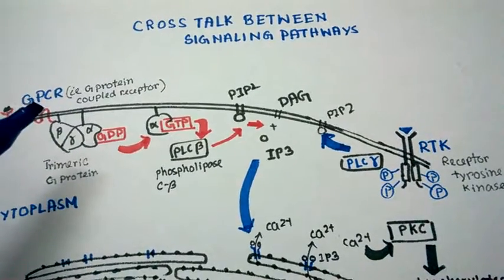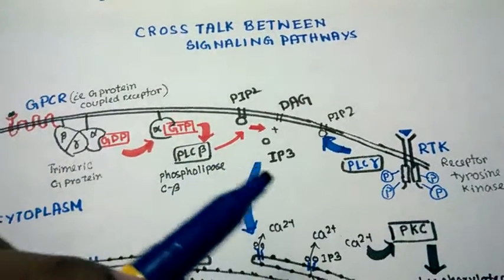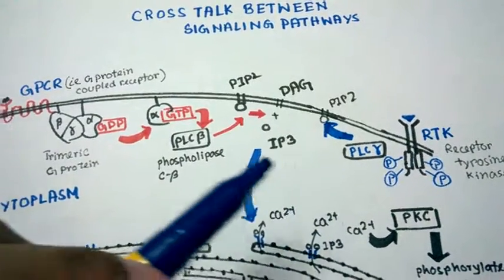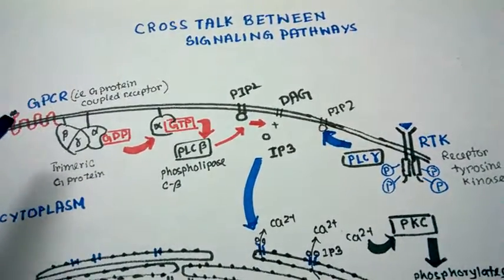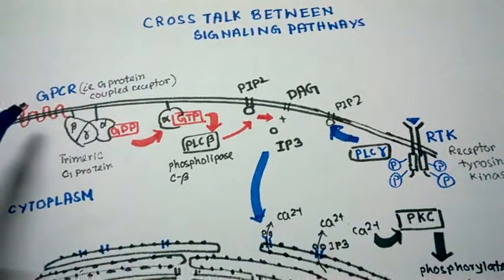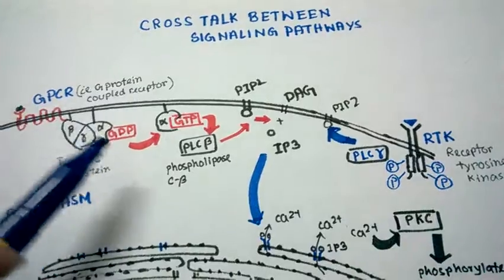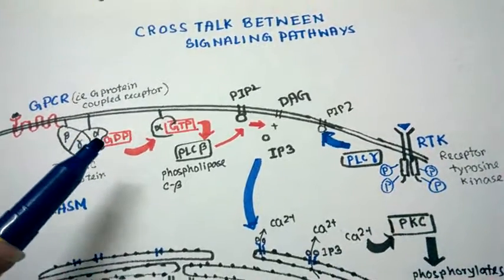For instance, here we have a GPCR-mediated signaling pathway going on, and here we have a receptor tyrosine kinase-mediated pathway. In the GPCR pathway, upon ligand binding, the receptor-associated G protein undergoes a conformational change.